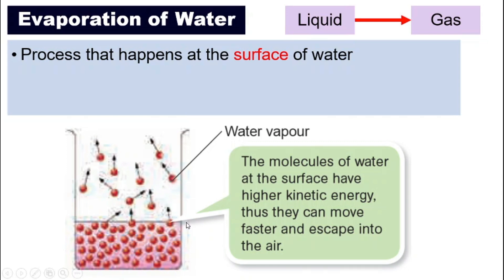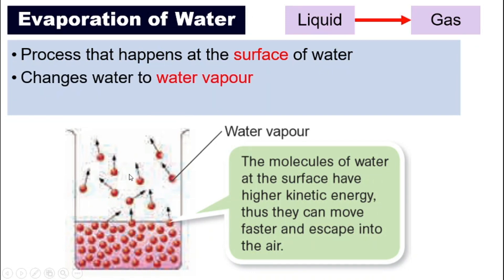Let's take a look at this diagram. The water molecules at the surface normally have higher kinetic energy, meaning they move faster and move a lot more compared to the rest of the water molecules. So they can escape into the air and turn into water vapor. This process changes water to water vapor and it's called the evaporation of water.